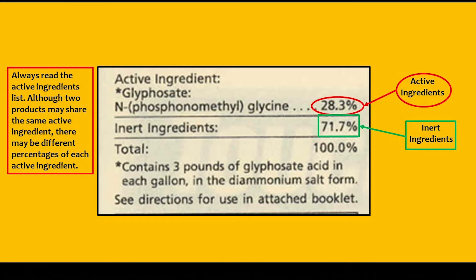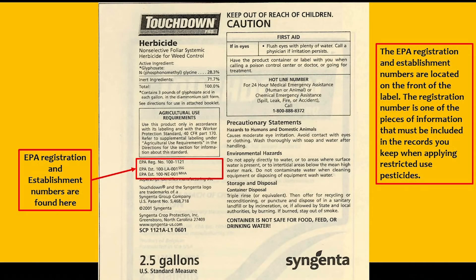Always read the active ingredient list. Although two products may share the same active ingredient, there may be different percentages of each active ingredient. In this case, we can see that there is 28.3% glyphosate and 71.7% inert ingredients. The EPA registration and establishment numbers are located on the front of the label.